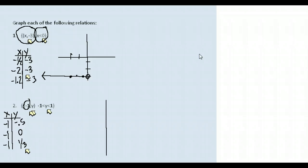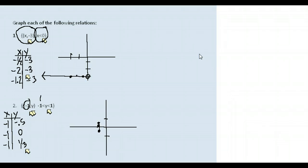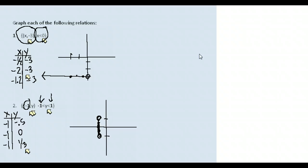Graphing these points — (−1, −0.5), (−1, 0), (−1, 1/3) — we get a vertical line. It has to start at Y = −1 and end at Y = 1, with open circles at both endpoints since negative one and positive one are not included, just like when graphing on a number line. So the graph is a vertical line at X = −1, going from Y = −1 to Y = 1.